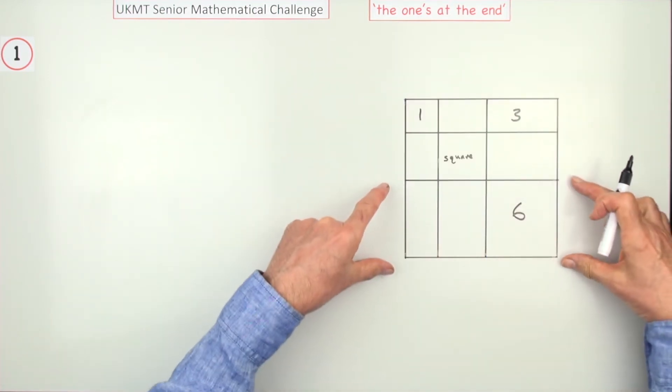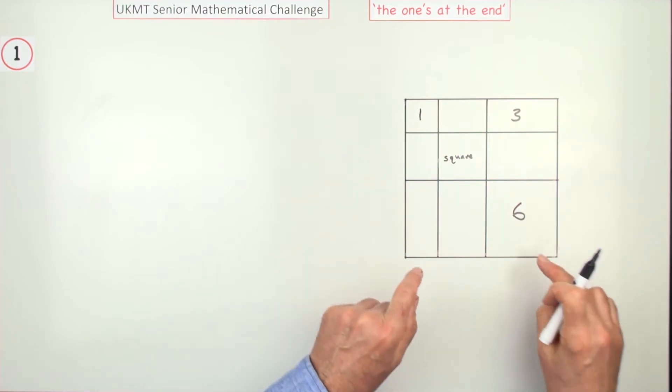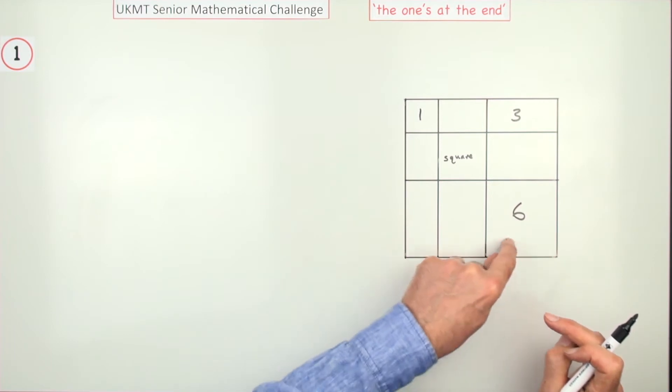Moving down here, again, they've got the same height, so their areas will be in proportion to the widths. Well, if this is a third of the width, there must be a third of the area, so that area must be 2.